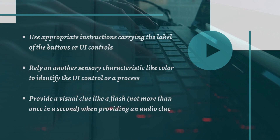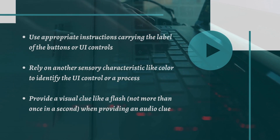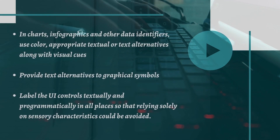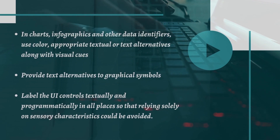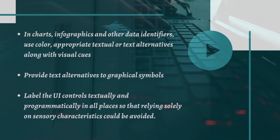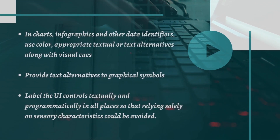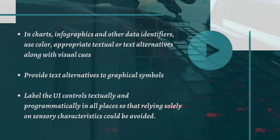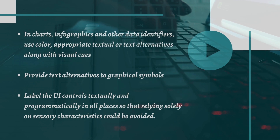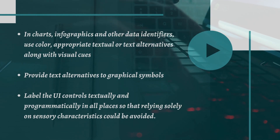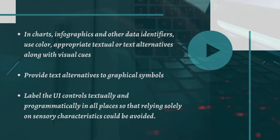In charts, infographics, and other data identifiers, use colors and appropriate textual or text alternatives along with visual cues. One should provide text alternatives to graphical symbols. One should label the UI controls textually and programmatically in all places so that relying solely on sensory characteristics can be avoided.